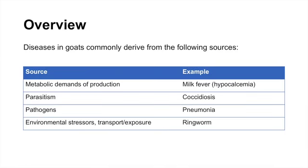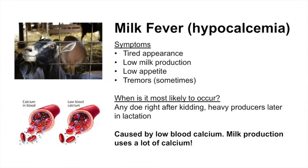Today we're going to talk about four main sources of disease. First, metabolic demands of production — specifically milk fever, otherwise known as hypocalcemia in goats. Second, parasitism, using coccidiosis as an example. Third, pathogens — specifically a bacterial pathogen that results in pneumonia. And fourth, environmental stressors such as transport and exposure to extreme weather, using ringworm as our example.